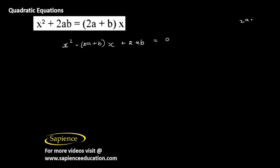Okay, now to use the middle term splitting technique we are going to split 2a plus b, not 2a plus b, we are going to split minus 2a plus b into two numbers such that the product of those two numbers must be equal to the product of the coefficient of x square and constant.